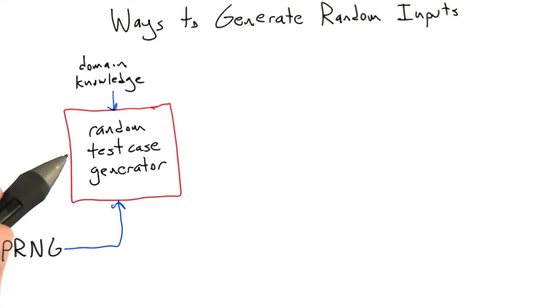We already looked at one example, testing the adder, where essentially no domain knowledge was needed. That is to say, the random test case generator pretty much took its pseudo-random numbers and used them directly as test cases.